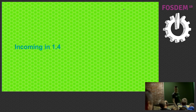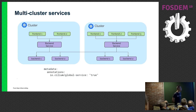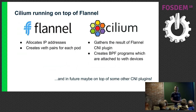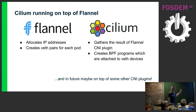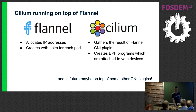Now I'll briefly cover features incoming in version 1.4. There will be a feature of multi-cluster services, so you will be able to have a service with backends across multiple Kubernetes clusters. There is also ongoing support for running on top of Flannel, and possibly other CNI plugins in the future. Cilium will be able to run as a chained CNI plugin — Flannel runs first, allocates IP addresses and creates veth pairs, and then Cilium as the chain plugin receives that information and creates BPF programs for those veth devices. For now this is only for Flannel, but other CNI plugins may be supported in future versions.